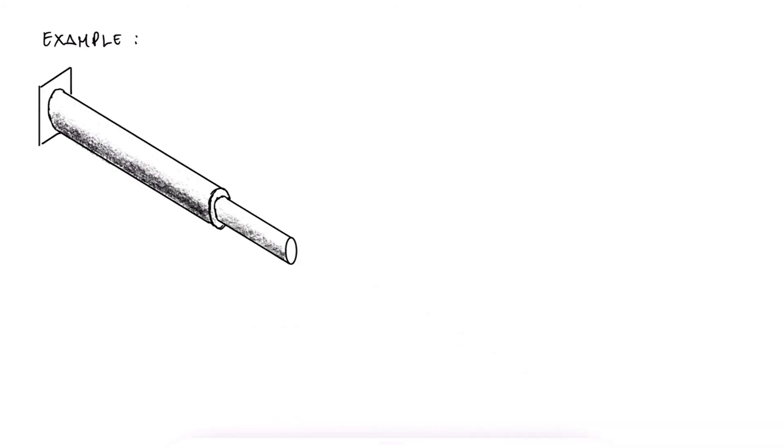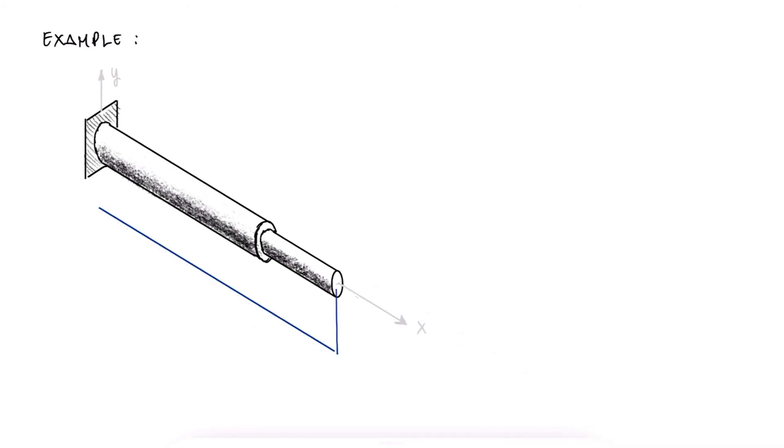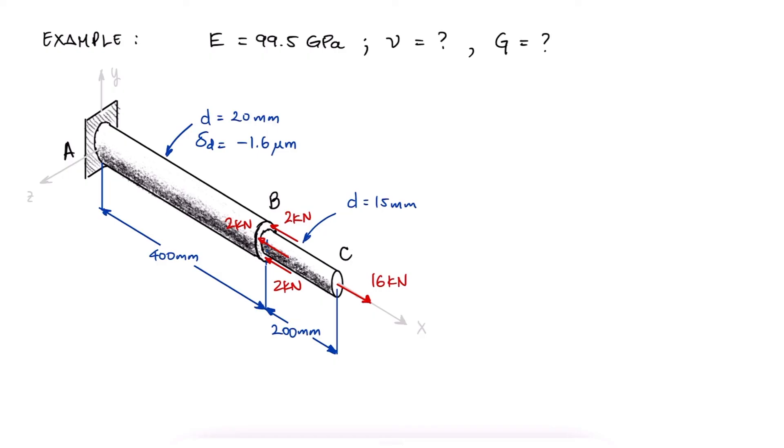Let's look at a simple example where we make use of what we've learned here. A two-section 600mm long rod, 20mm and 15mm in diameter, that has an elastic modulus of 99.5 gigapascals, is subjected to the axial loads shown in the figure. If the diameter of section AB shrinks by 1.6 microns, what is the Poisson's ratio and the shear modulus of the material, and what's the change of diameter of section BC?